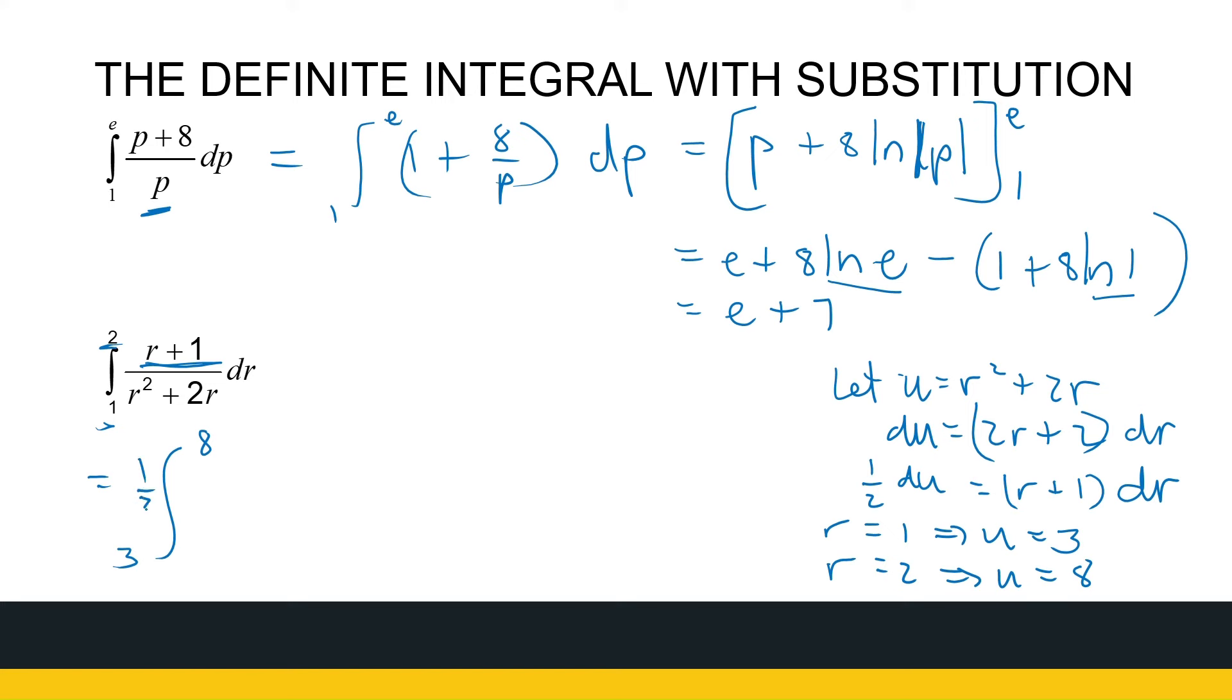I've got a half. I can write that in front. And I've just got 1 over u du. So again, we've got a ln function. So that's a half ln absolute value of u between 8 and 3. Now if either of these numbers were negative, this absolute value will change it to a positive number. But we don't have that. So that's a half ln 8 minus ln 3. And we don't have to calculate that as a decimal number, unless we use it for a further calculation, we can leave it just like that. And that's correct.